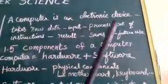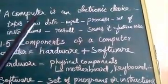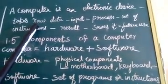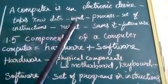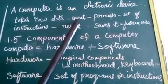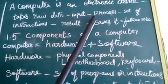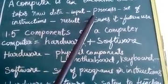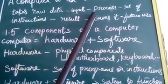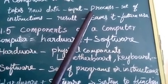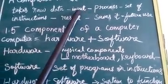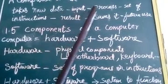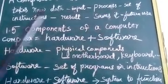Next, the definition of a computer: a computer is an electronic device that takes raw data — that is input — and processes it according to instructions, such as calculating a multiplication table. For example, if we give the raw data and the program — the set of instructions — it produces the three-times table as output.